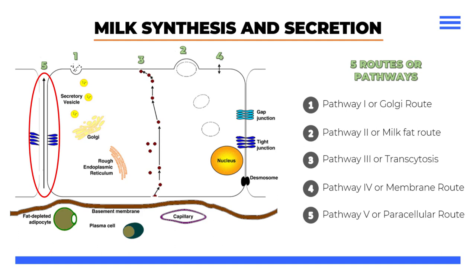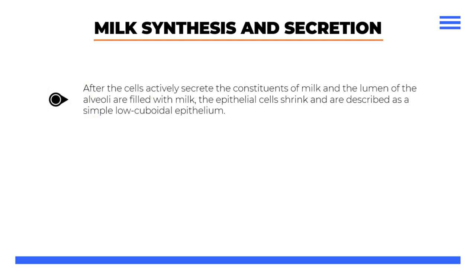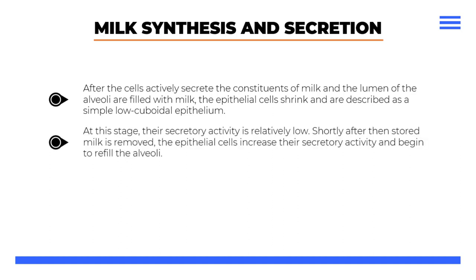Transport by the paracellular pathway is transient and stops once tight junction connections form between cells. After the cells actively secrete the constituents of milk and the lumen of the alveoli are filled with milk, the epithelial cells shrink and are described as a simple low-cuboidal epithelium. At this stage, their secretory activity is relatively low.